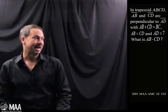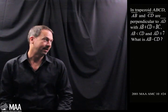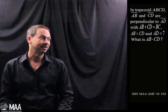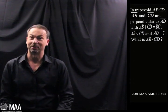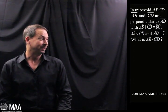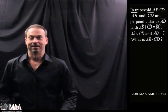In trapezoid ABCD, AB and CD are perpendicular to AD, with AB plus CD equals BC, AB is less than CD, and AD equals 7. I just read that very fast because I don't really know what I just read, to be honest. And the question is, what is AB times CD? Alright.